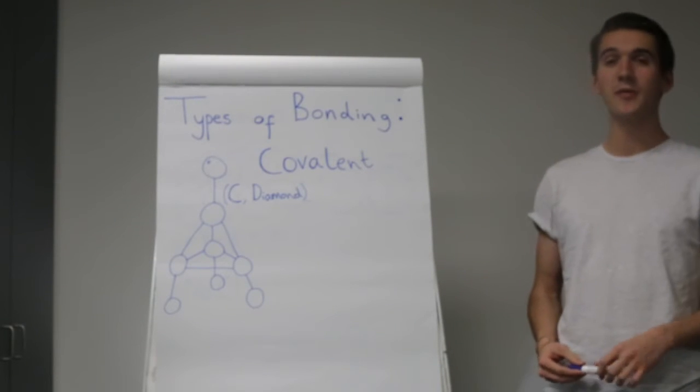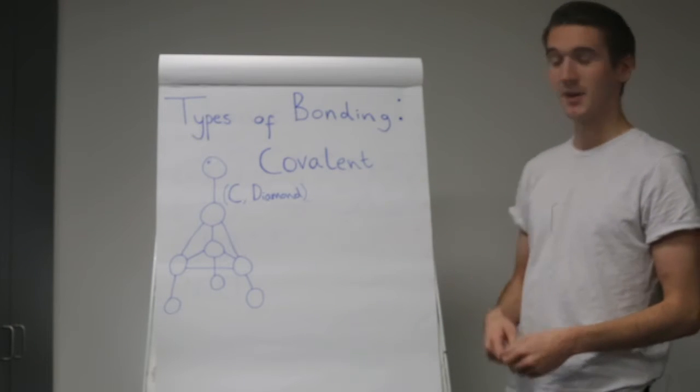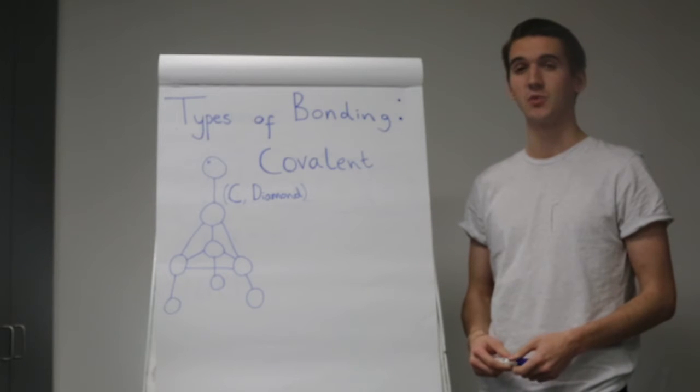So let's go over the basics. What are the types of bonding in crystallized structures? Well, to start with we have covalent bonding, characterized by the sharing of electrons between atoms.